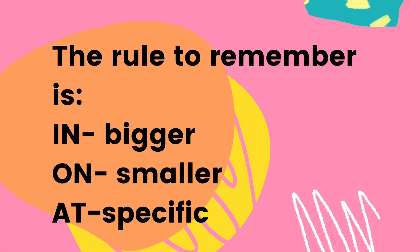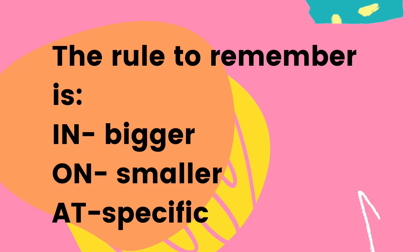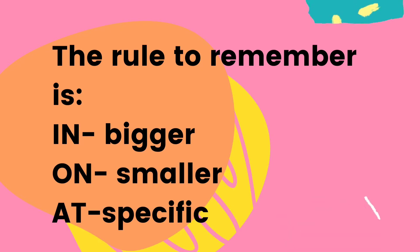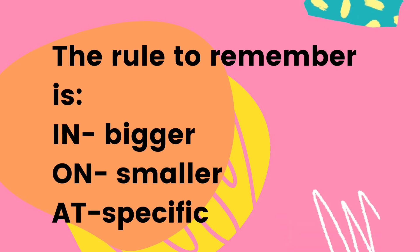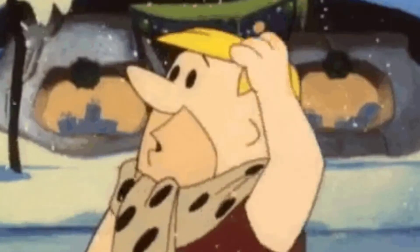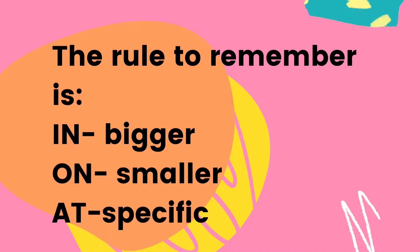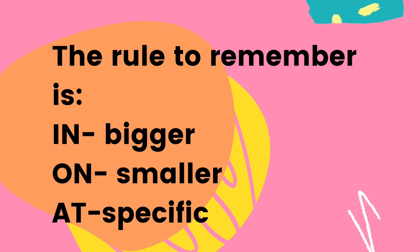Alright, the general rule to remember is: in is for bigger area, on is for smaller, and at is for a specific place. Don't worry, I will give you more explanation and examples on each of these.